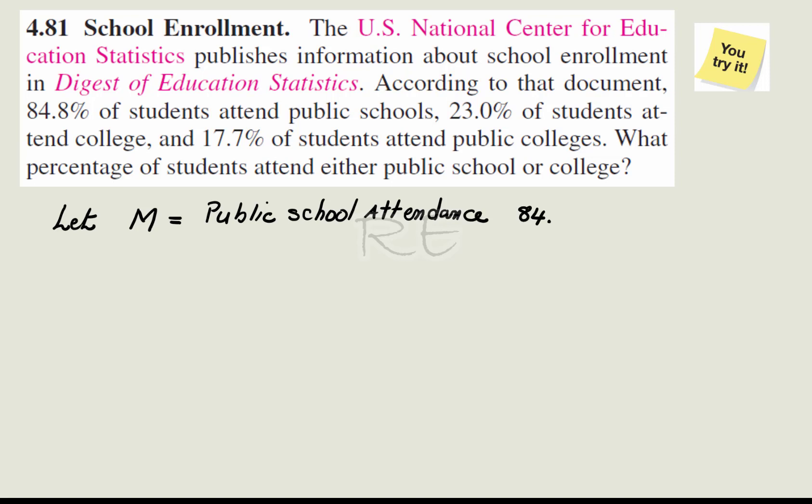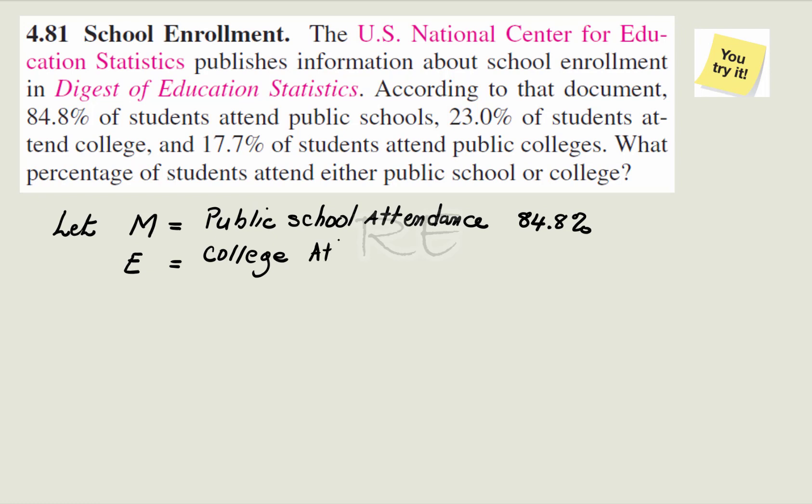Let M be public school attendance, 84.8%. Let E be college enrollment. And enrollment will be 23.0%. Now, P of M or E will be equal to P of M plus P of E minus P of M and E.